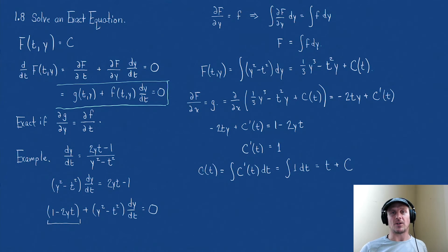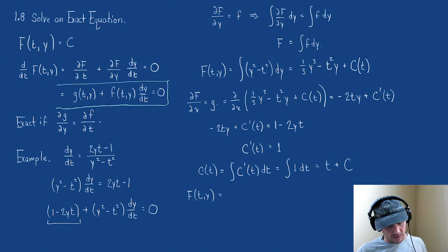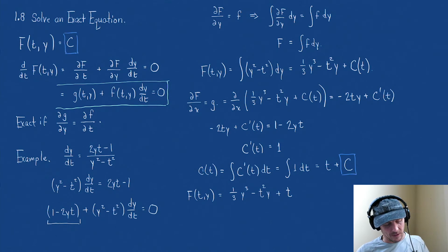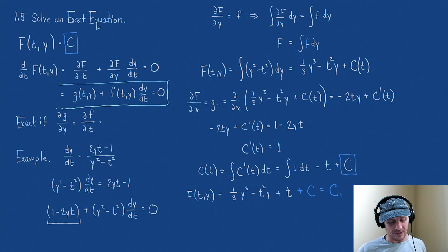Now we've solved our problem. We can write F(t, y) equal to one-third y cubed minus t squared y plus t, and this equals c. The constant from the integration combines with the other constant and is just written as a single capital C.